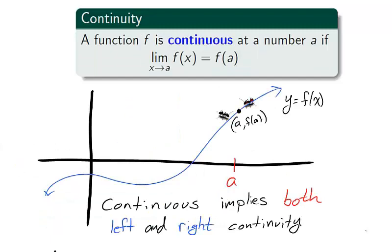Like with limits, the two-sided concept is supported by the one-sided. A function is continuous at x equals a if and only if it is continuous from both the left and the right.